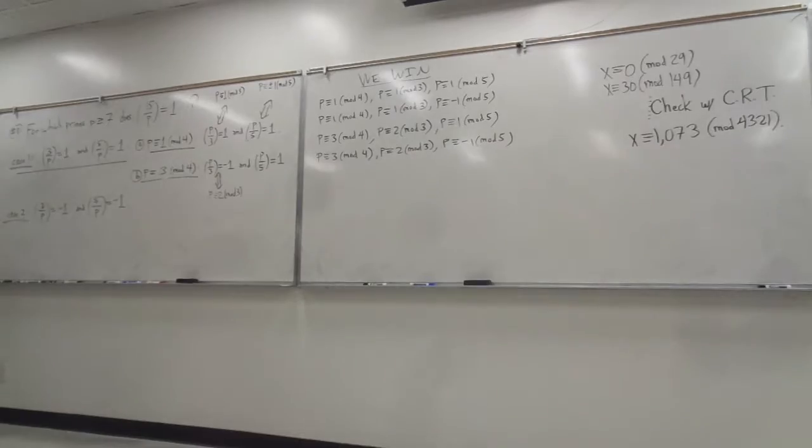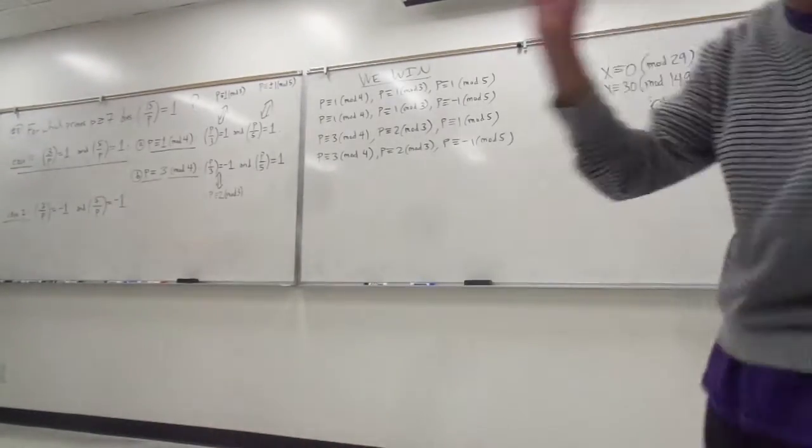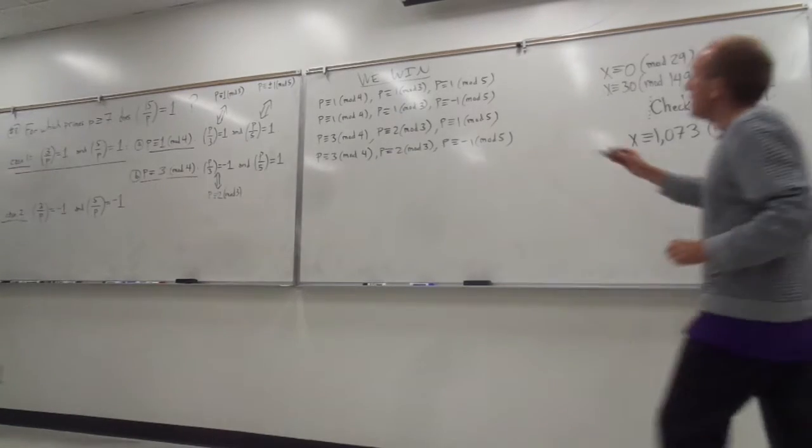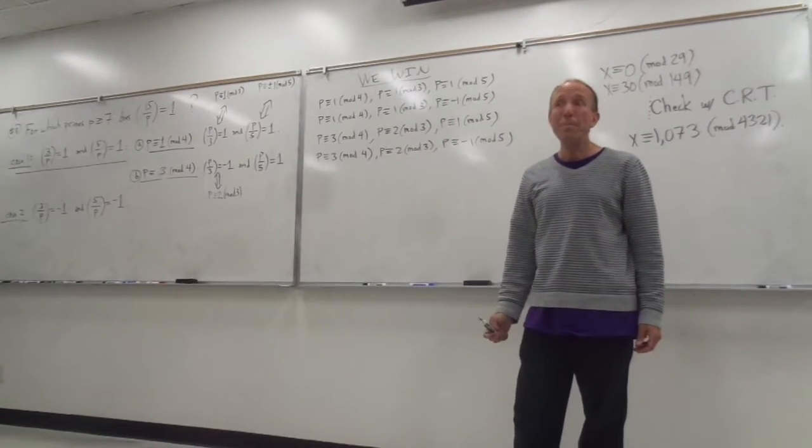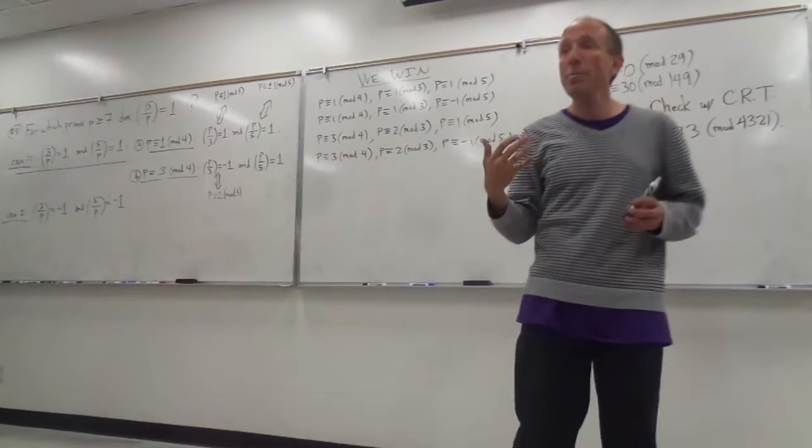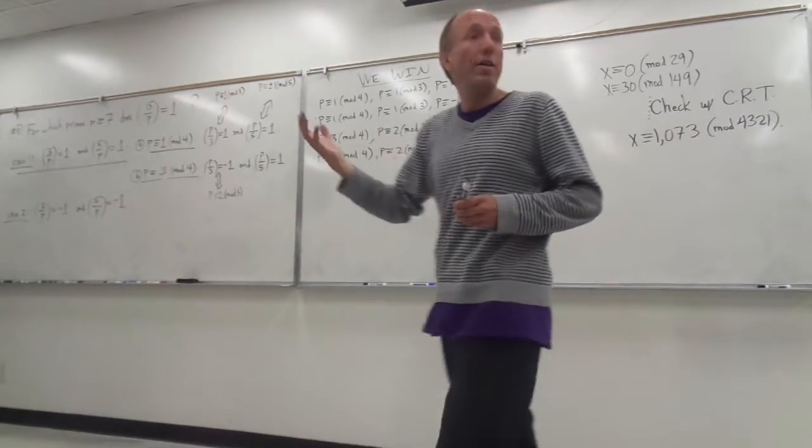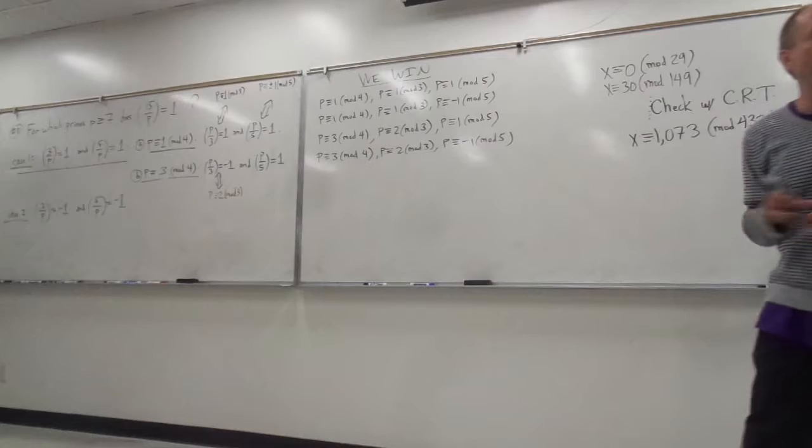Is everybody with me so far? What's my notes? Oh my gosh, they're right under here. That's okay. Do you guys see that you're going to get solutions that are unique, modulo 60? Mod 3, mod 4, and mod 5, right? Those are relatively prime numbers. 3 times 4 times 5 is 60. So far, I have four ways that we win.